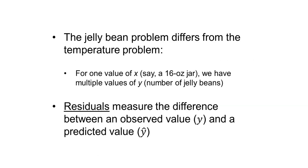Now the jelly bean problem is different from the temperature problem. For the temperature problem, we have specific values. If it's one temperature in degrees Celsius, it can only be one temperature in degrees Fahrenheit. For the example with the jelly beans, for one value of x, say if we're looking at all the jelly beans in a 16-ounce jar, we have multiple values of y, the number of jelly beans. Let's say each student in class could guess how many jelly beans are in the jar. The concept of residuals measure the difference between some observed value y and some predicted value y hat. This is an important concept in regression when we'll begin to be talking about residuals and how they fit around the regression line.